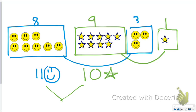When we're writing these, the coefficient in this term would be 8 smiley faces. The coefficient in this term would be 9 stars. The coefficient in this term would be 3 smiley faces, and the coefficient in this term would be 1 star. So we would say 8 smiley faces plus 9 stars plus 3 smiley faces plus a star equals 11 smiley faces and 10 stars. This is one way to think about combining like terms.